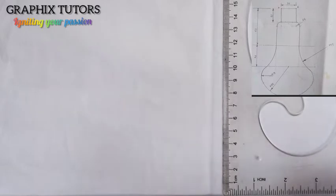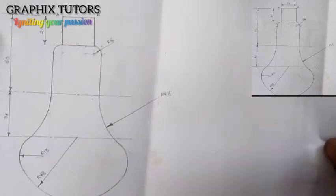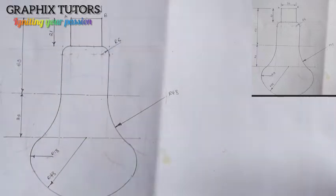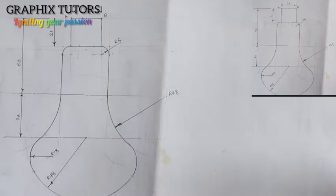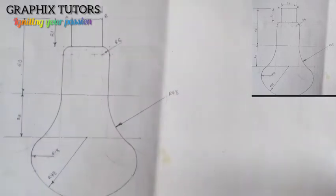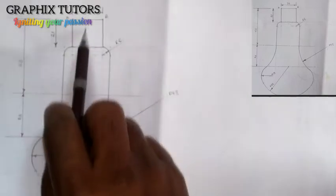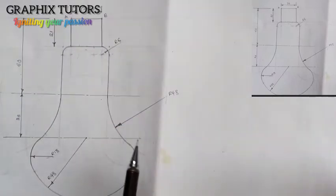Good everyone, my name is Graphics. Today we want to solve another problem involving tangency. Now if you look at the top right corner of your screen, you're going to see a figure which we are told to work to reproduce. The first thing you do when you see this figure is try and draw a vertical line. You notice that this figure is symmetrical — that means if you divide it into two, what is on the left-hand side is the same as what's on the right-hand side.